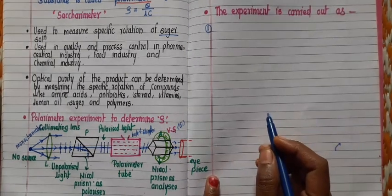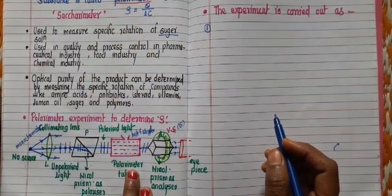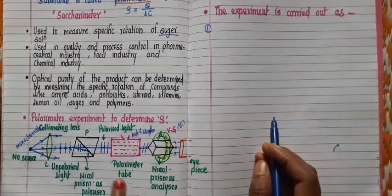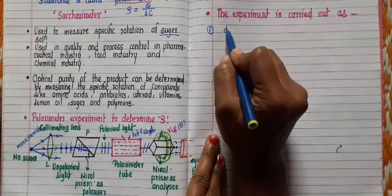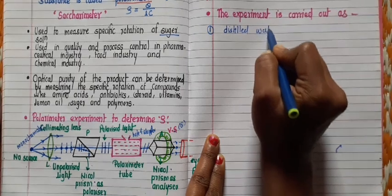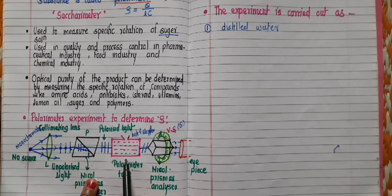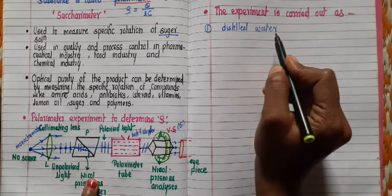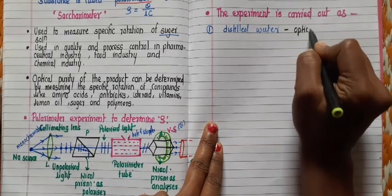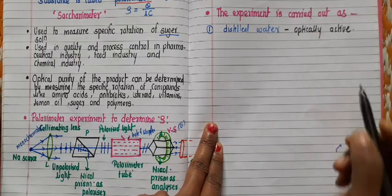There are three steps to calculate the specific rotation of any optically active substance. In the first step, the polarimeter tube is filled with distilled water. Distilled water is an optically inactive substance — meaning it does not possess the property of optical activity and does not rotate the plane of polarization of the passing plane polarized light.